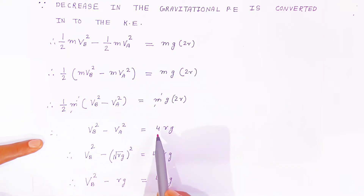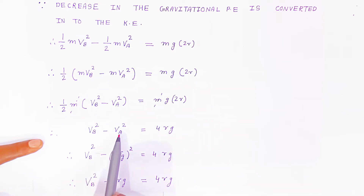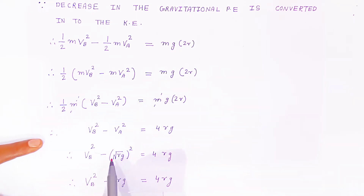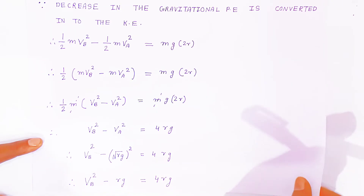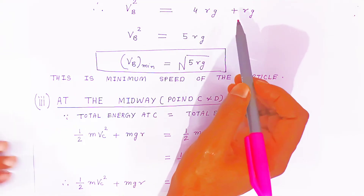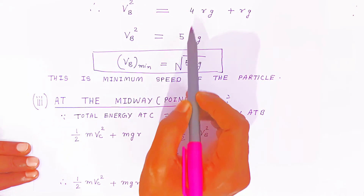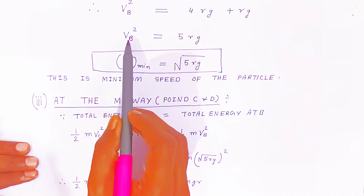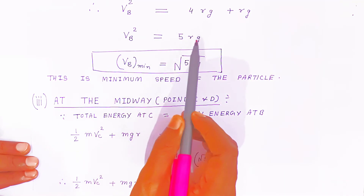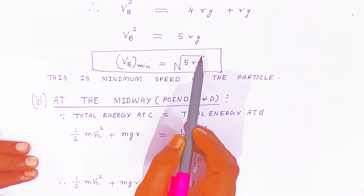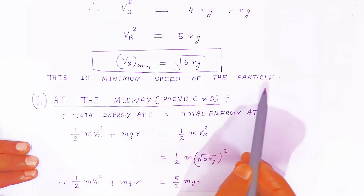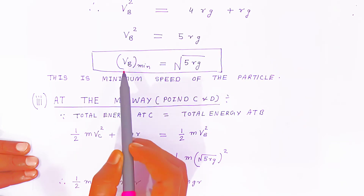Since v_A = √(Rg), we have v²_A = Rg. Substituting: v²_B − Rg = 4Rg, so v²_B = 4Rg + Rg = 5Rg. Therefore, minimum velocity at point B is v_B = √(5Rg). This is the minimum speed of the particle at point B.